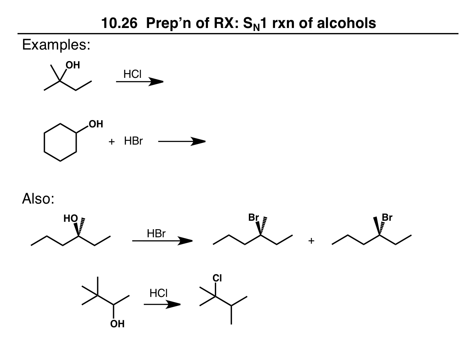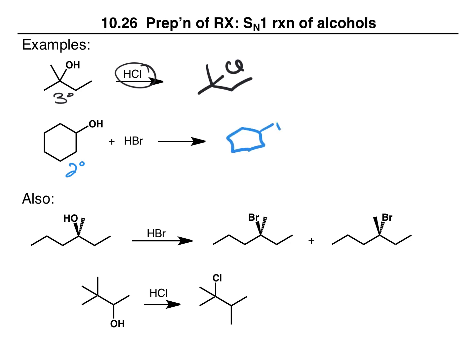By understanding the mechanism of an SN1 reaction, it allows us to predict the reaction that is going to happen. Here we have a tertiary alcohol being treated with HCl: the oxygen grabs off a proton to give the protonated alcohol, water leaves to generate a tertiary carbocation, and then chlorine adds, leading to our product. Here we have a secondary alcohol: the alcohol grabs off a proton forming the protonated alcohol, water leaves forming a secondary carbocation, and then bromine adds — nucleophile adds to electrophile — leading to the product.